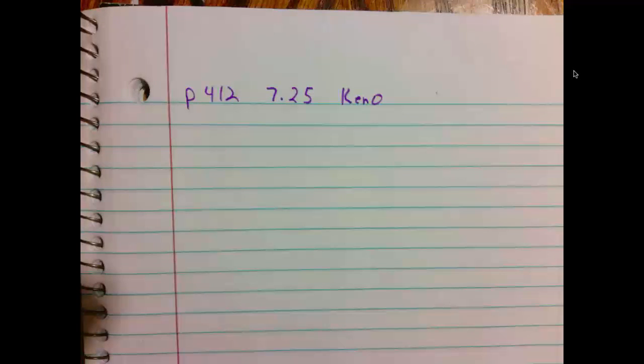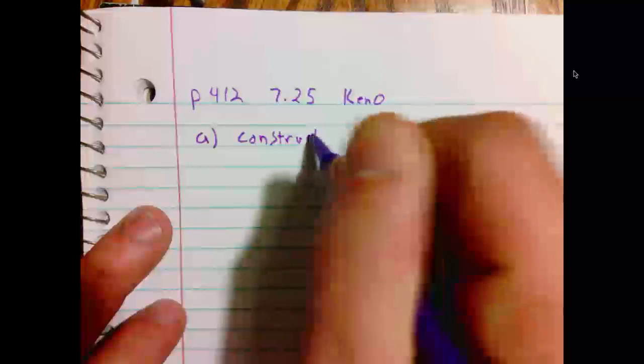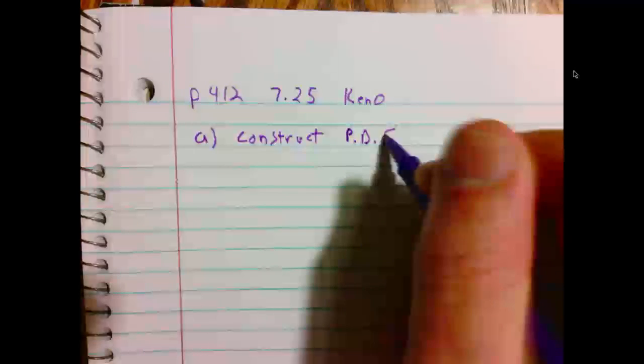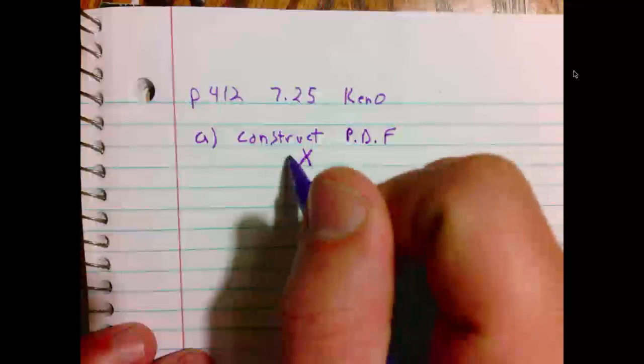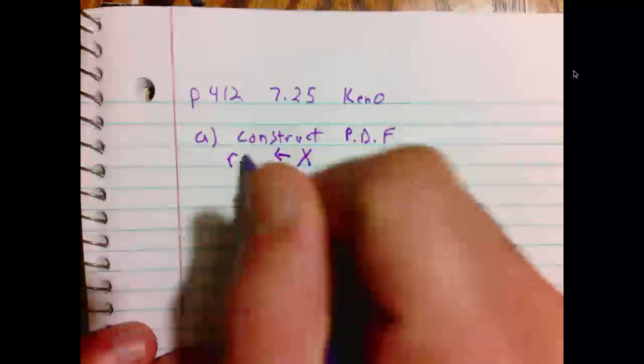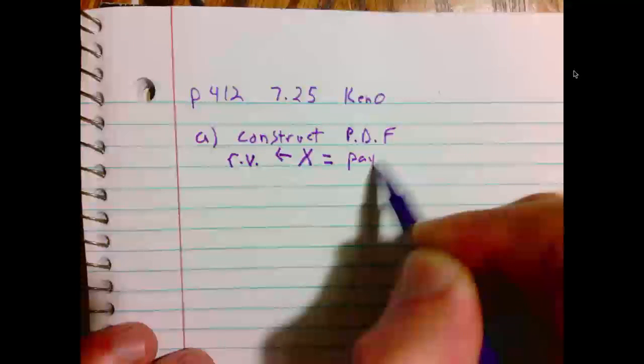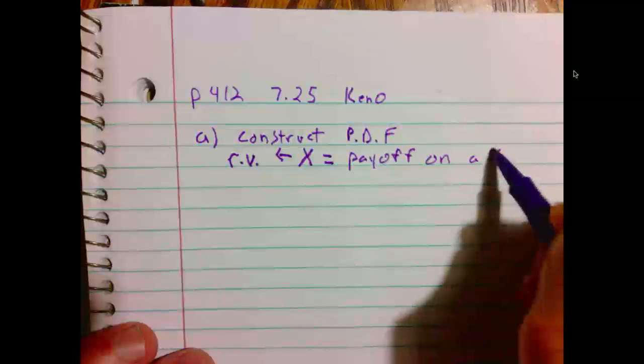Part A says, what is the PDF, the probability distribution of a payoff X on a single play? We're going to construct the probability distribution function. We will let X, X is our random variable, X is going to equal payoff on a $1 play.